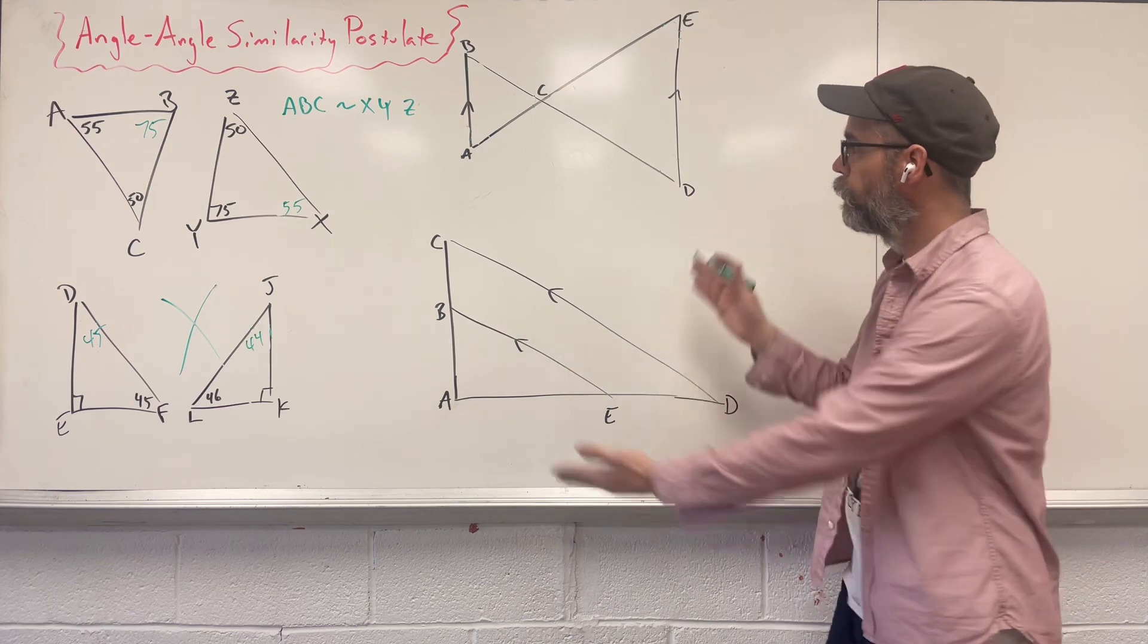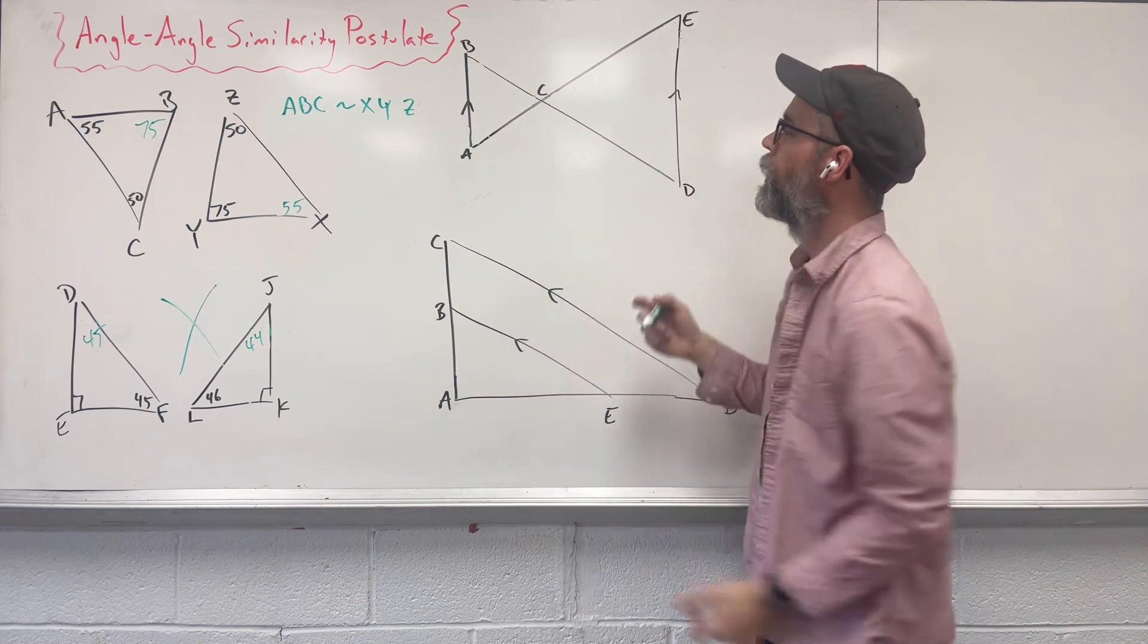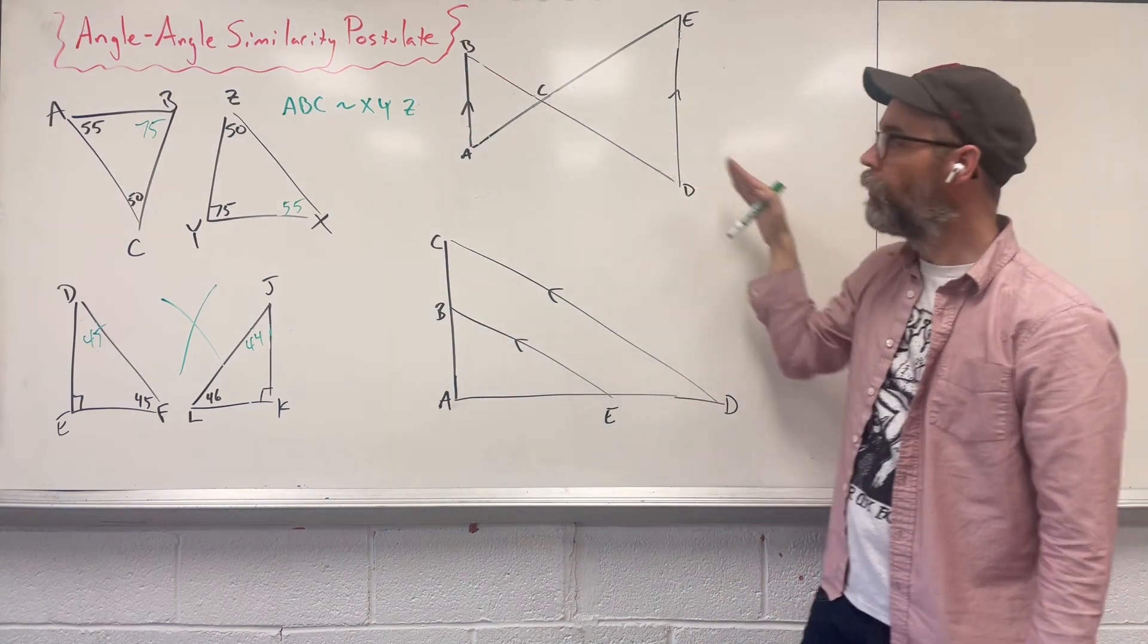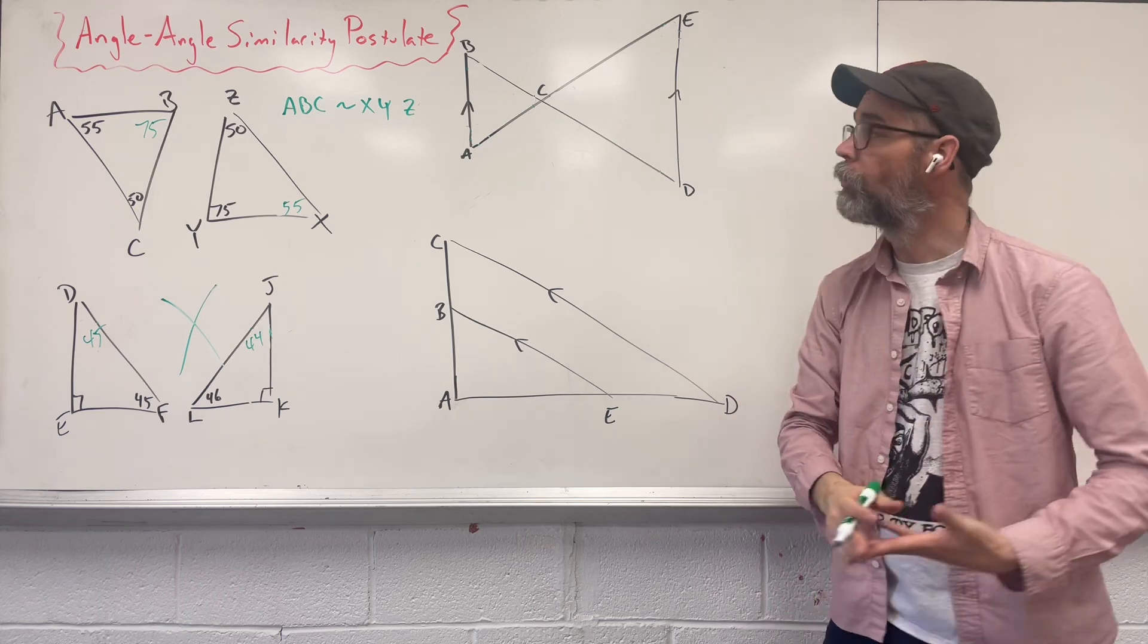Earlier on in geometry, we learned when we have a parallel line, and we know that because of these little arrows here, and then a transversal that cuts through those lines, they form alternate interior angles.